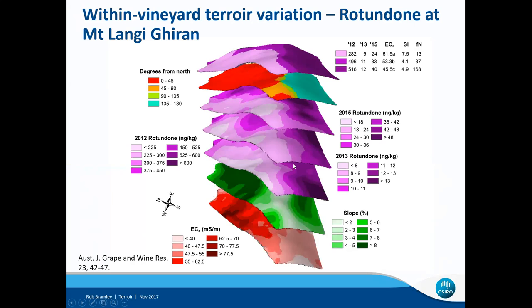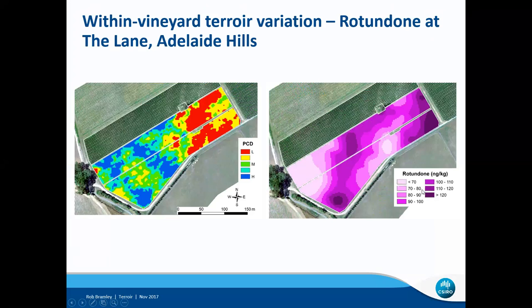In contrast to the Deakin Estate example, in this particular example there was no association between variation in vine vigour and variation in rotundone concentration. Here's another example from one of the Lane vineyards in the Adelaide Hills, where on the left hand side we've got a map of vine vigour derived from imagery, and here a map of rotundone collected from last vintage. You can see that the patterns of variation in those two maps are really not in any way similar. Again, clearly some indication of terroir varying at the within-vineyard scale.